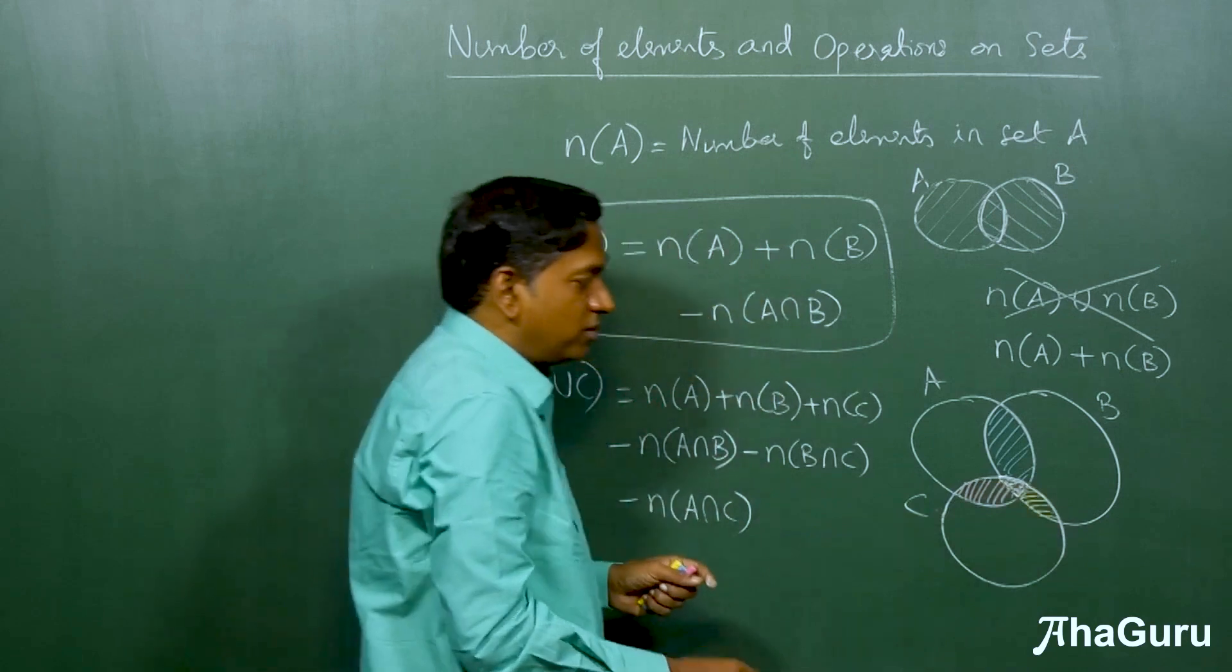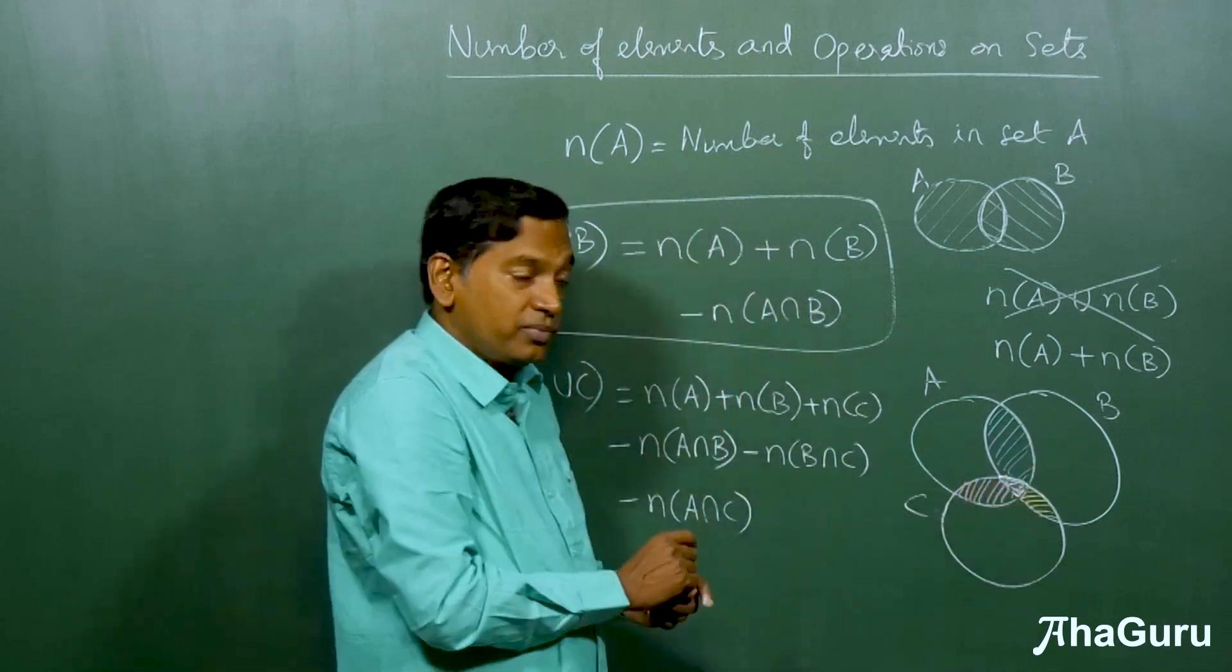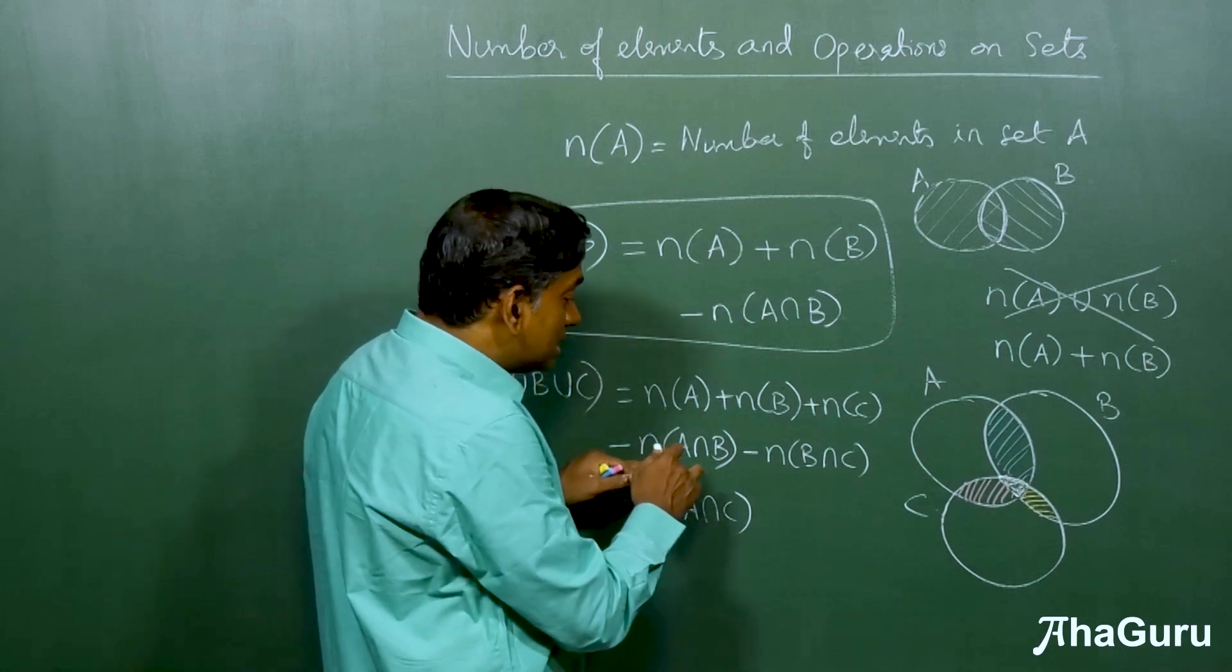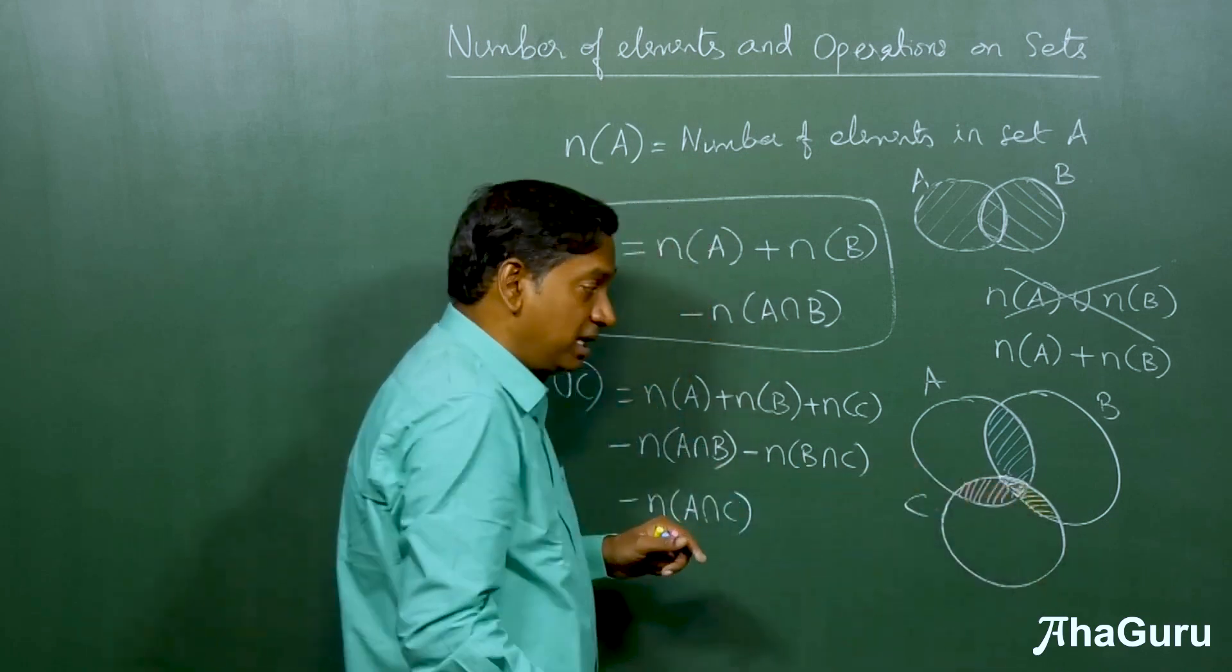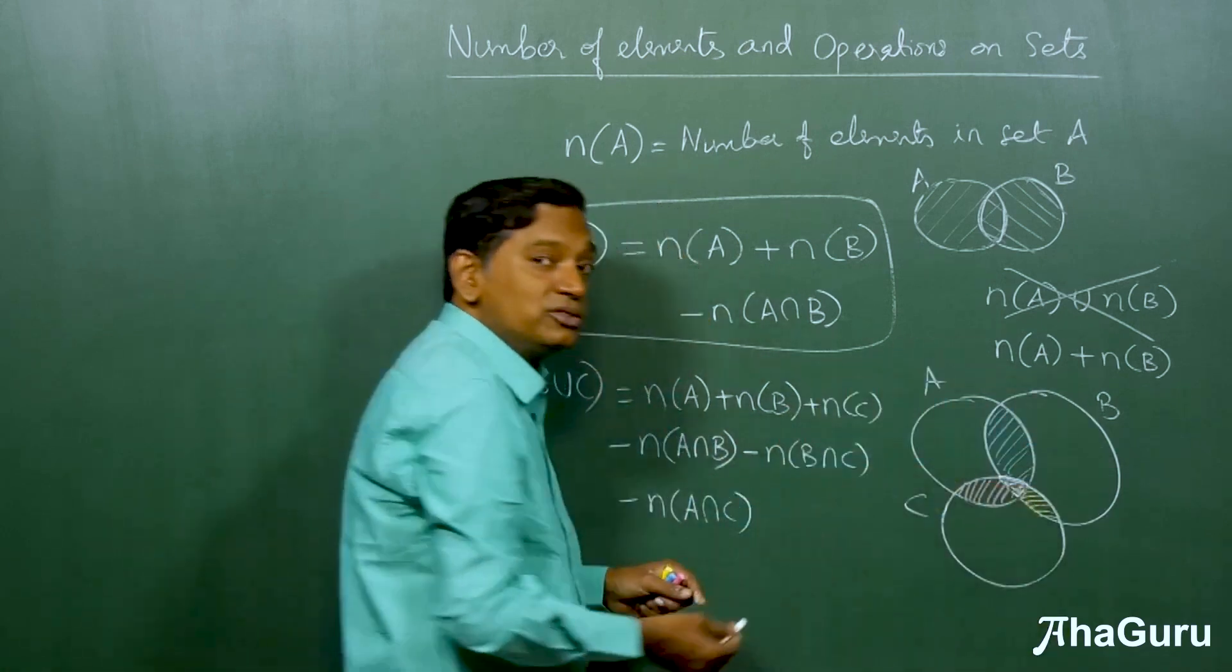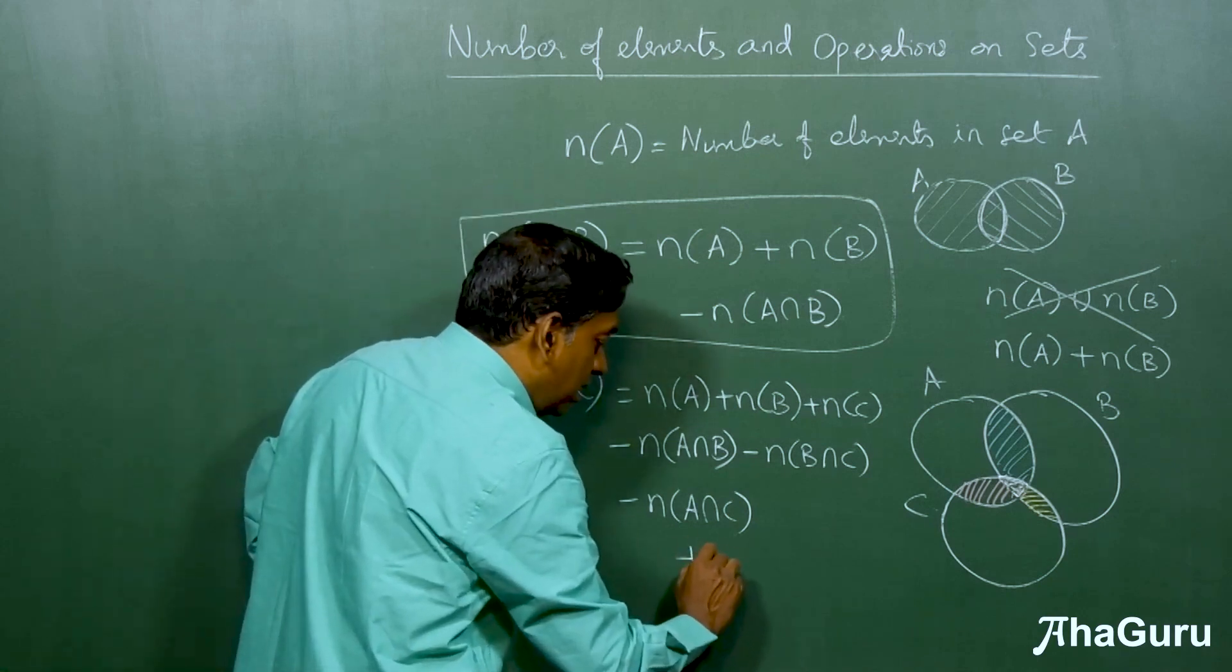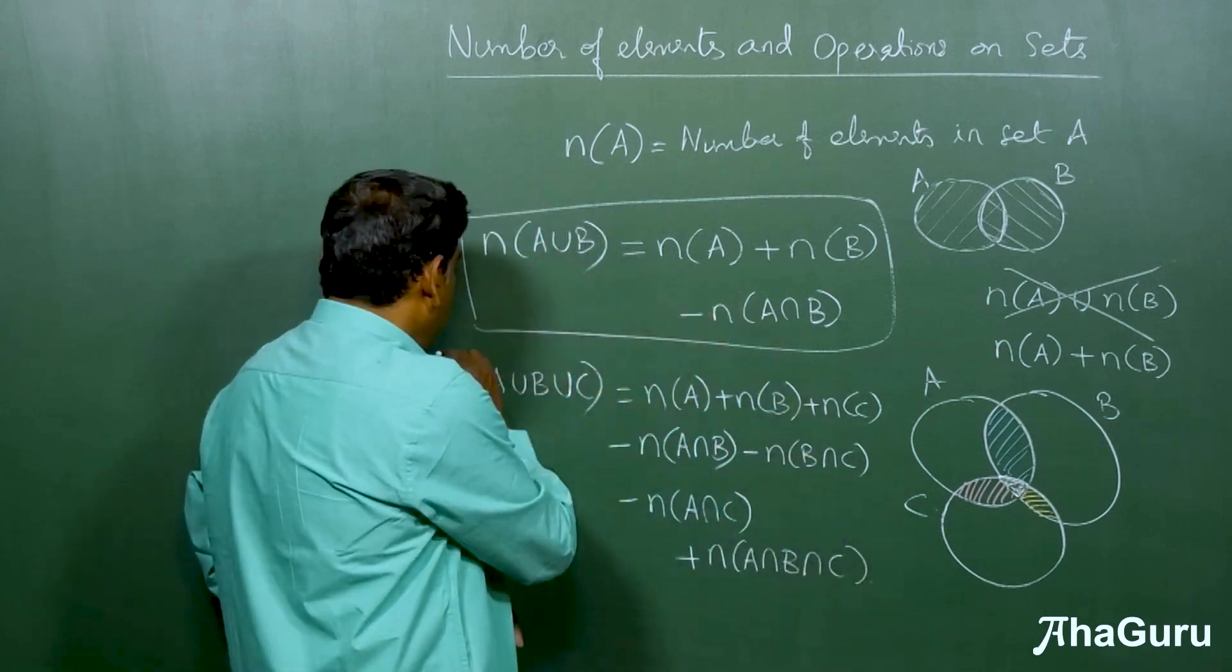It's the intersection of all the three colors, so I'll just put it as white. Now this region got added once in A, once in B, once in C. So it got added three times. But it also got subtracted three times. It got subtracted when we subtracted A intersection B, because this is part of A intersection B. This is also part of B intersection C and A intersection C. That means in the final analysis, this region does not find a place at all. But that's wrong. This is also included in the A union B union C.